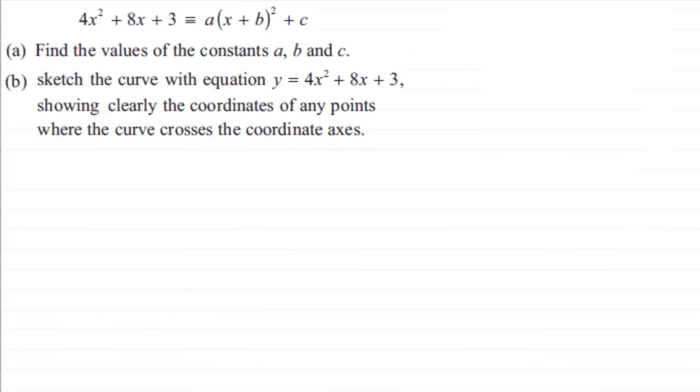Hi, welcome to an example on completing the square. What we're going to do is complete the square for 4x² + 8x + 3. In other words, write it in this format, a times (x + b) all squared plus c.